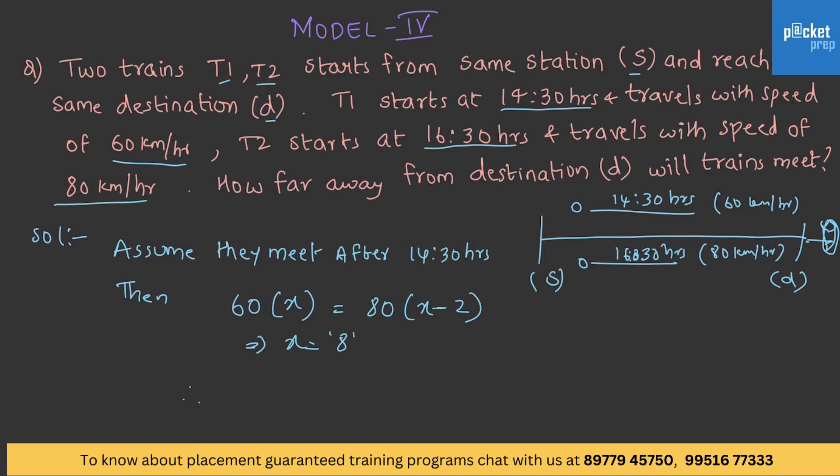That is, where do they meet, the distance after which they meet, is 60 into 8. That is equal to 480 kilometers.